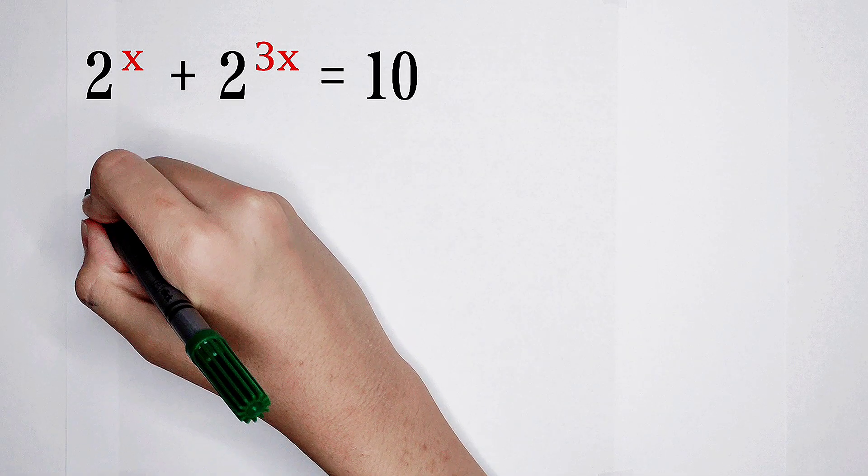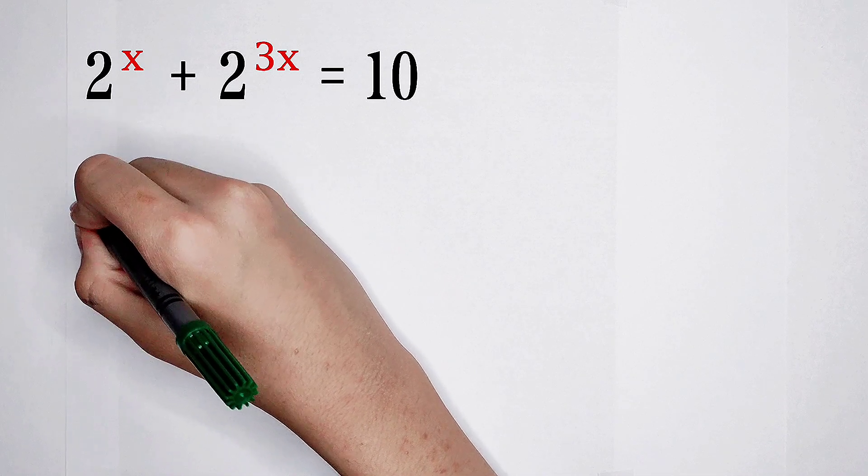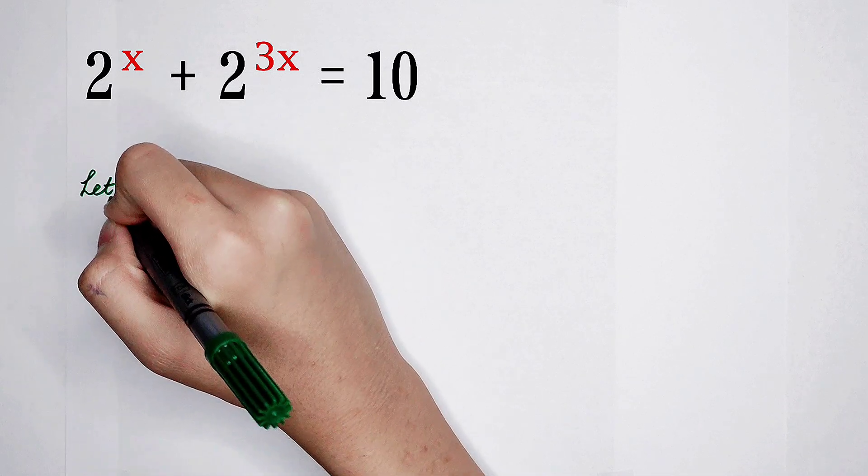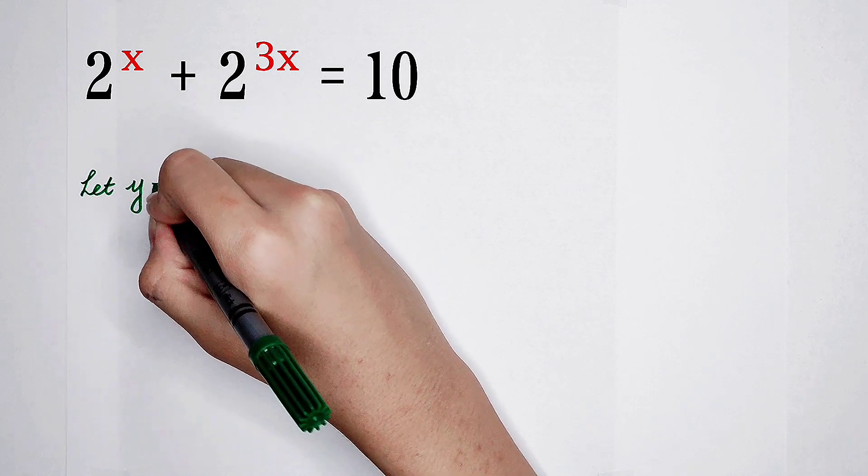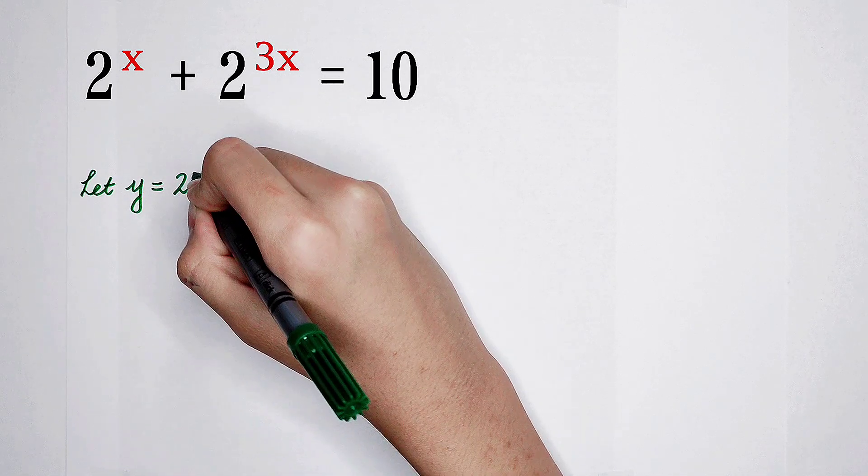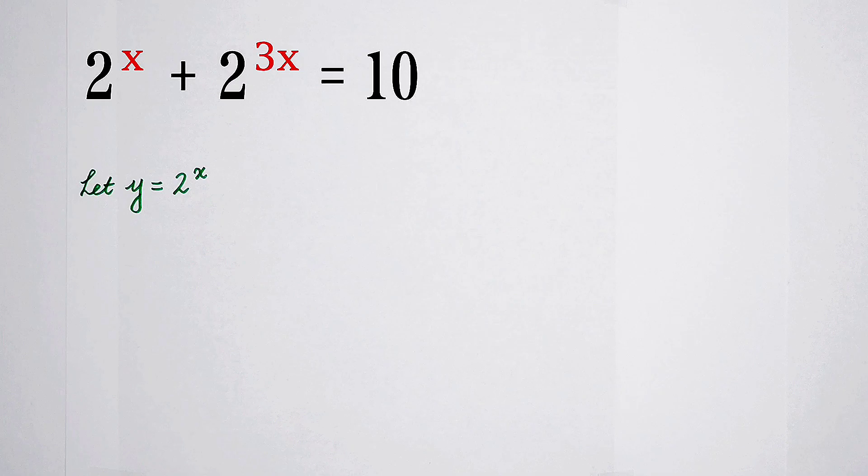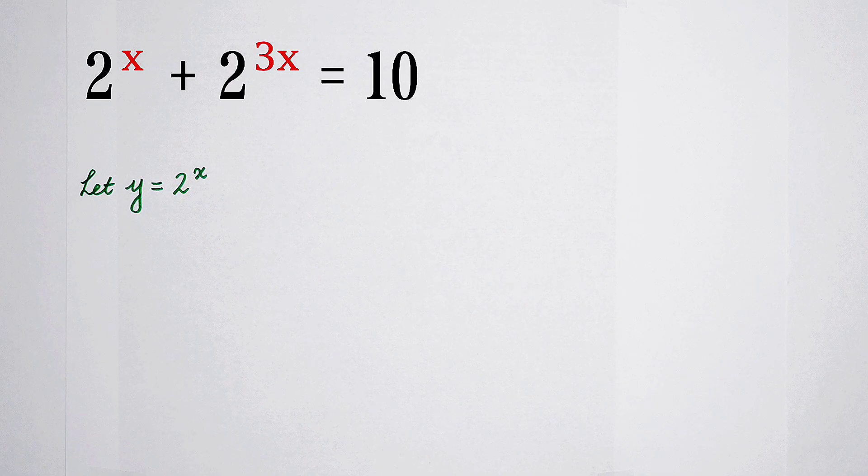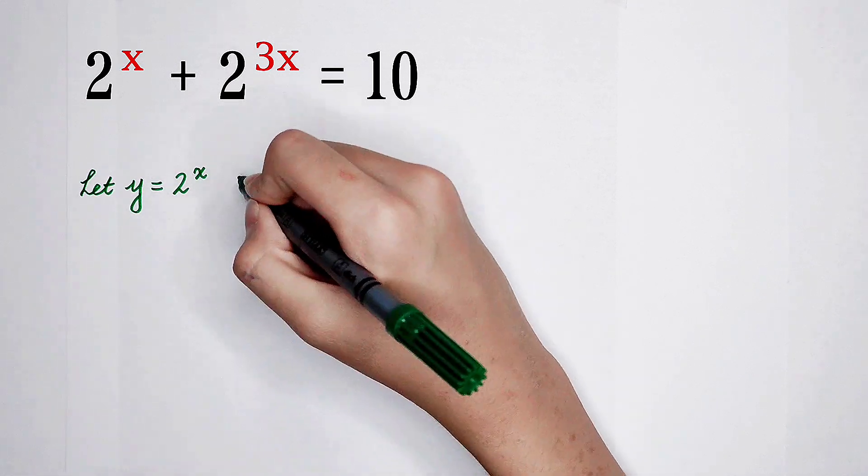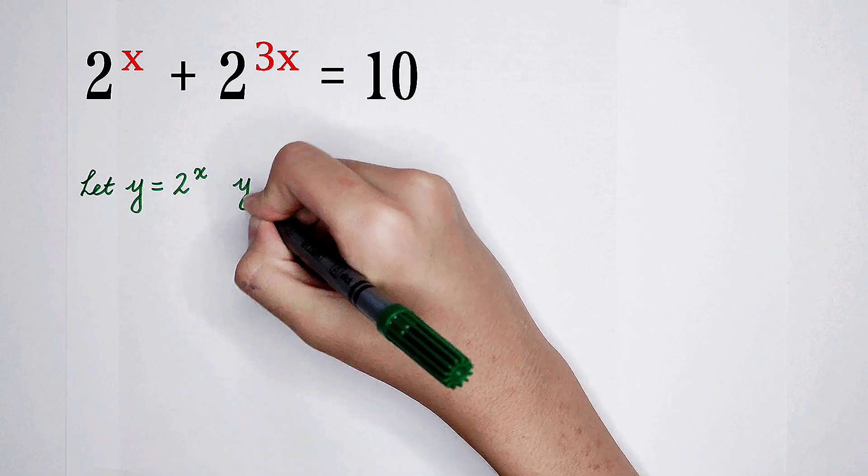So our first work is, we let y equal 2 to the power x. Because 2 to the power 3x is just y to the power 3.